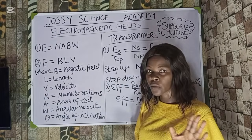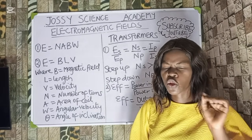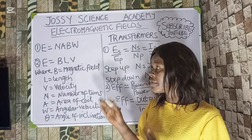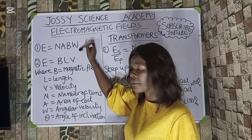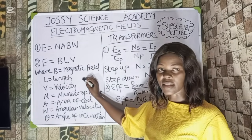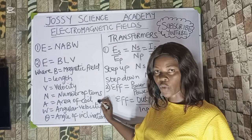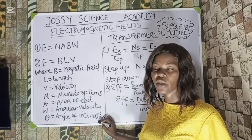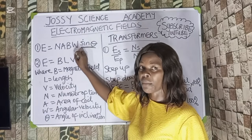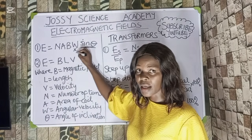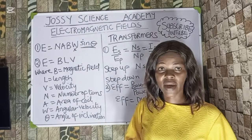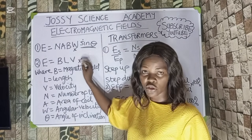Now for electromagnetic field. The induced EMF in a conductor can be given in two ways. EMF equals N·A·B·ω, or EMF equals B·L·v. Here B is magnetic field in Tesla, L is length, v is velocity, N is number of turns, A is area of the coil, and ω is angular speed. If an angle is given, include sinθ in the first formula. Use N·A·B·ω when you have turns, area, magnetic field, and angular speed; use B·L·v when you have magnetic field, length, and velocity.